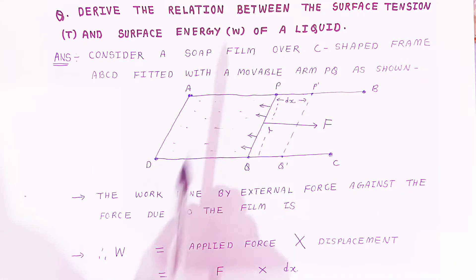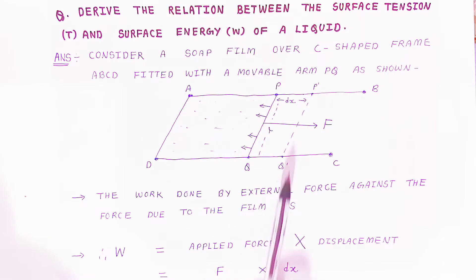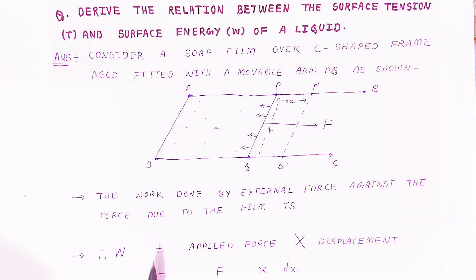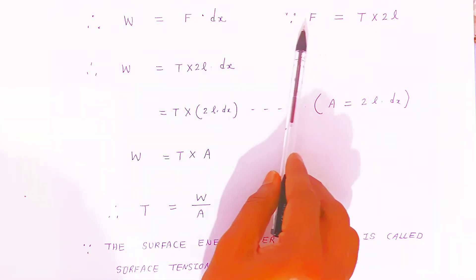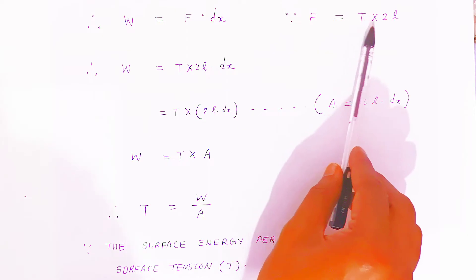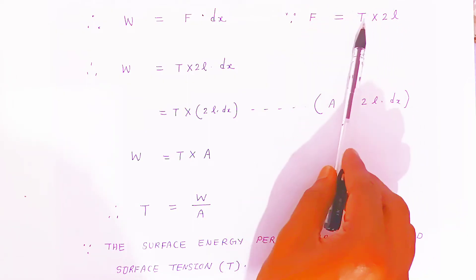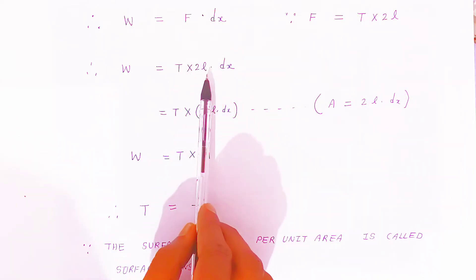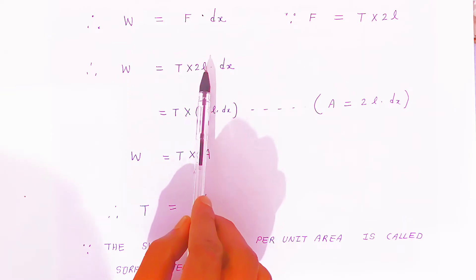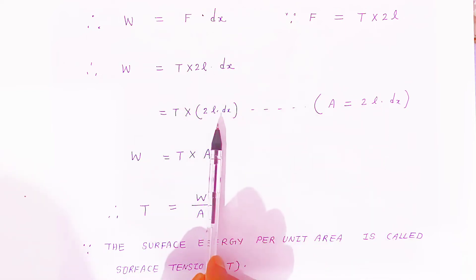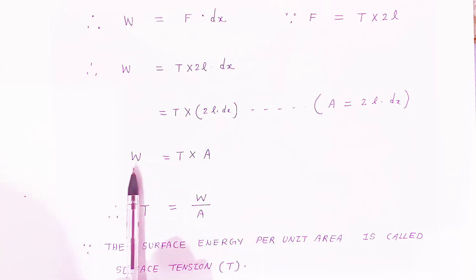Work done W equals applied force F into displacement dx. Now, the surface has force which is nothing but surface tension T into two L — two because the soap film has two surfaces, inner and outer. So force equals T into 2L. Substituting: W equals T into 2L into dx. Since length into breadth equals area, work done is nothing but surface tension T into area.